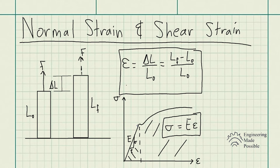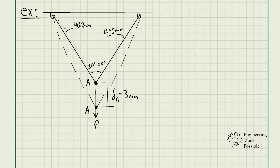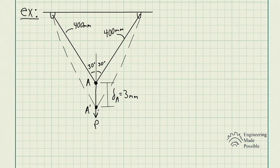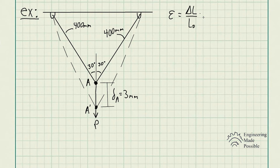Let's do an example on normal strain. We have two wires hanging and attached at point A, each with a length of 400 millimeters. The force P causes point A to be displaced vertically 3 millimeters. We need to determine the normal strain in each of the wires. The original location was point A, and with the force it deformed to final position A prime, displaced 3 millimeters. Strain equals the change in length divided by the original length, or final length minus original length divided by original length.